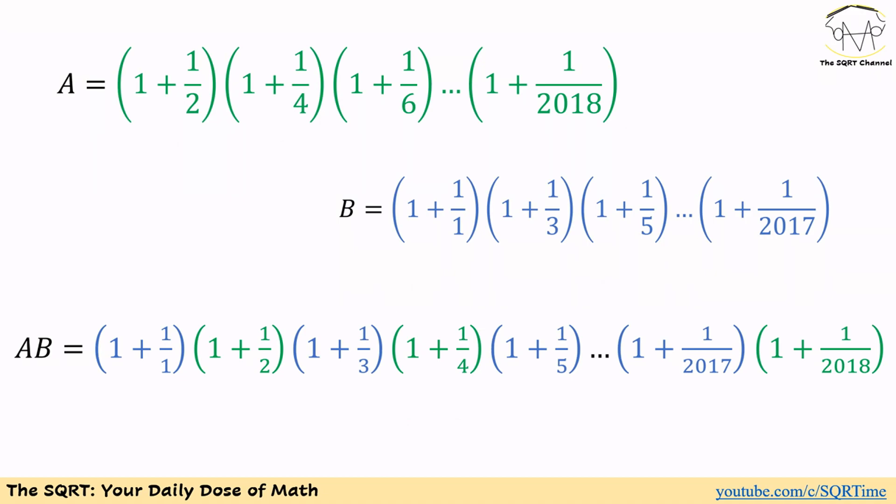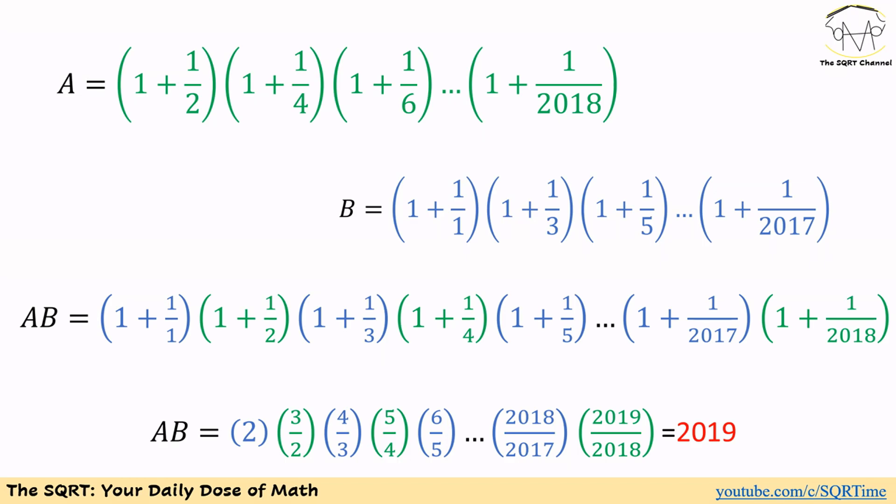Now that we have A and B and know A is less than B, I'm going to construct the product A times B. The terms from A are written in green and the terms from B in blue. Instead of multiplying them in sequence, I'll interleave them: first term from B (1 plus 1 over 1), then first term from A (1 plus 1 over 2), then next from B, then next from A, and so on. This gives us AB = (1 + 1/1)(1 + 1/2)(1 + 1/3)···(1 + 1/2018).